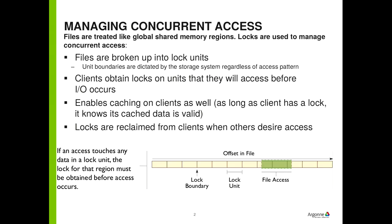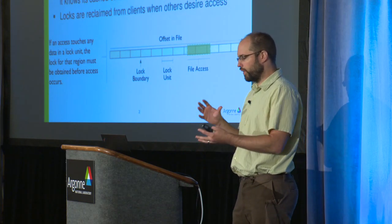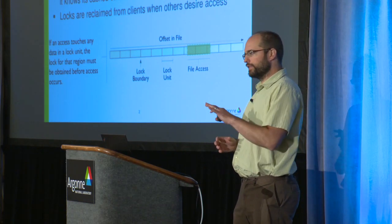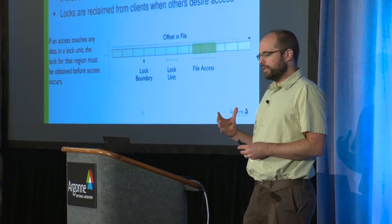That's not a big deal. If we understand how the file system is architected, we can adjust our behavior to make this a little more friendly to the file system. And it all comes down to this thing called lock management. You may think of a lock you take in a parallel application or a threaded application where you're acquiring a mutex. This is a different kind of lock, although it's a similar idea.